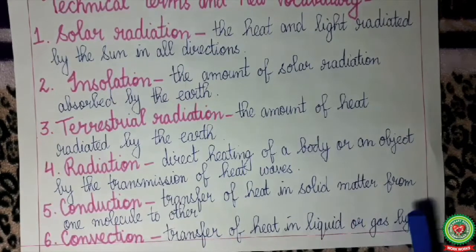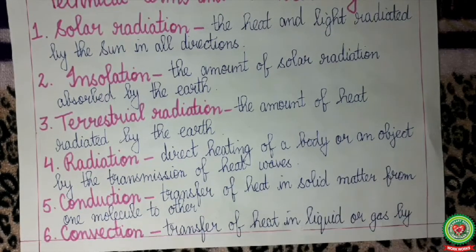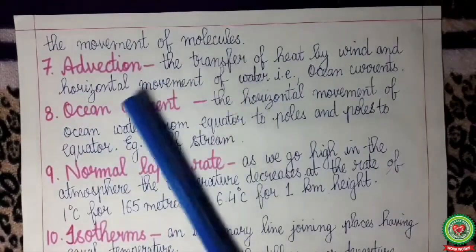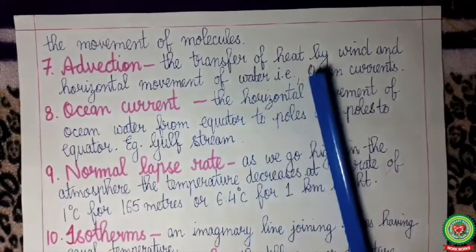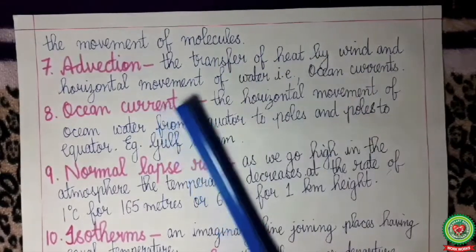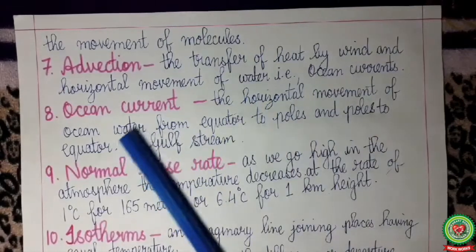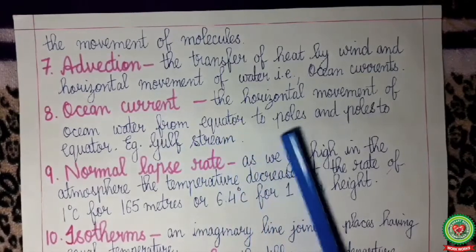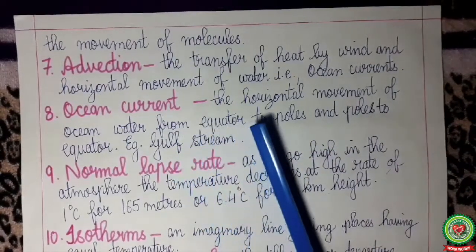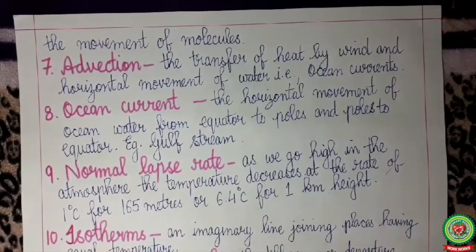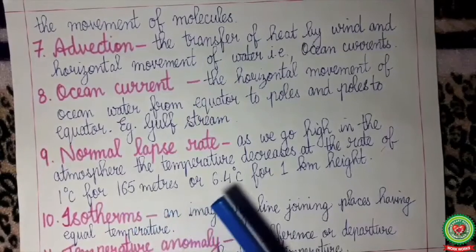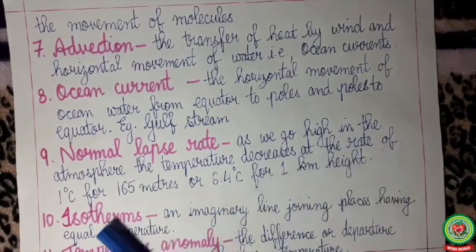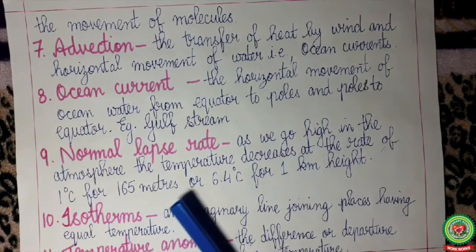Conduction is the transfer of heat in solid matter from one molecule to another. Convection is the transfer of heat in liquid or gas by the movement of water, that is by ocean currents. Ocean current — the horizontal movement of ocean water from equator to poles and poles to equator is termed as ocean current; example: Gulf Stream. Normal lapse rate — as we go high in the atmosphere, the temperature decreases at the rate of 1 degree Celsius for every 165 meters of height, or 6.4 degrees Celsius for 1 kilometer of height.